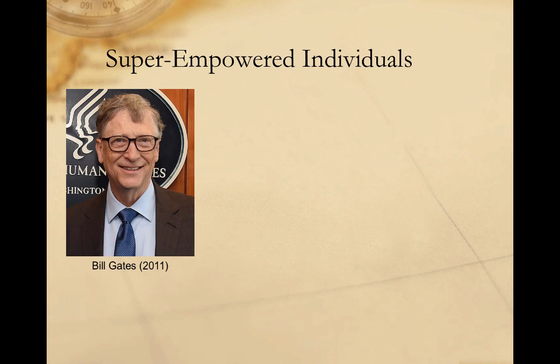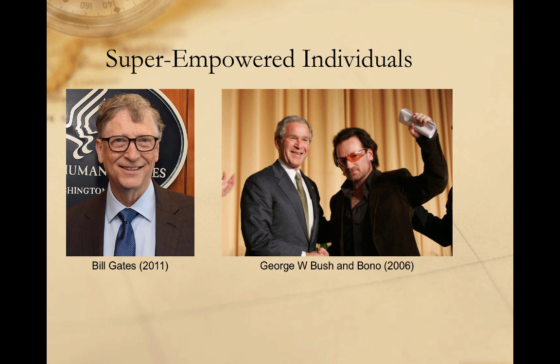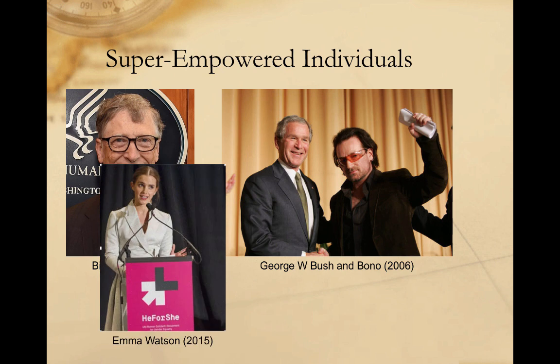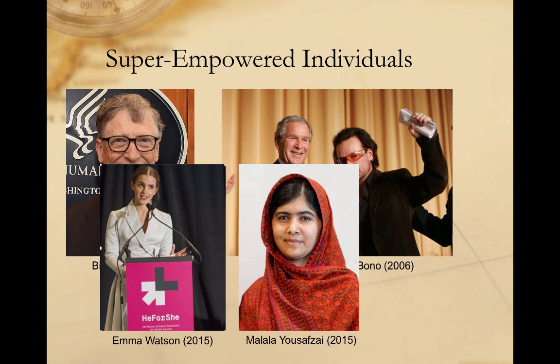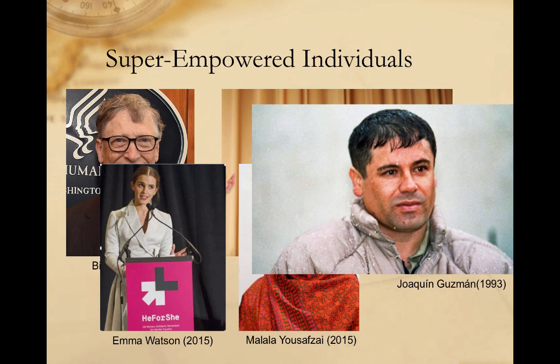Think of people like Bill Gates, who through the Bill and Melinda Gates Foundation provides billions of dollars in funding every year and helps shape discussions of global health and development. Or celebrities like Bono, who uses his popularity to draw attention to the challenges of development and the problem of odious debt, particularly in Africa. Or Emma Watson, who served as United Nations Goodwill Ambassador and used that position to promote the HeForShe campaign and women's rights. Or Malala, the Pakistani woman who became an international role model and activist for girls' education after the local Taliban tried to murder her at just 15 simply because she wanted to attend school. And lest we think all super-empowered individuals are progressive, we can also think of actors like Pablo Escobar, who ran the Medellin cartel in Colombia, or Joaquin El Chapo Guzman, who ran the world's largest drug cartel in Mexico until his arrest in 2016.